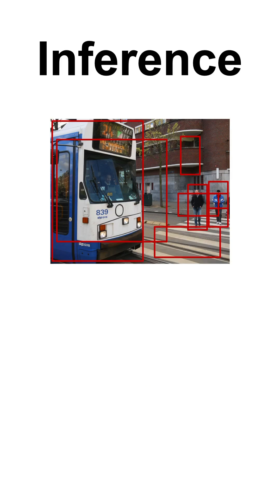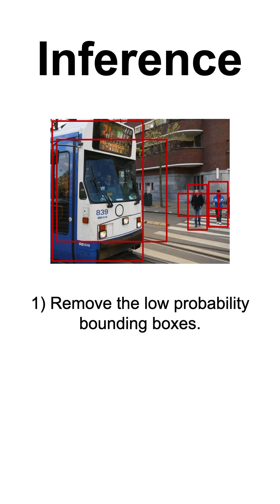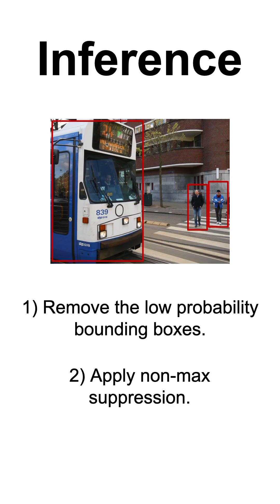During inference, YOLO removes the bounding boxes that have a low probability and the ones that have a high intersection over union with the bounding boxes that have the highest probabilities.